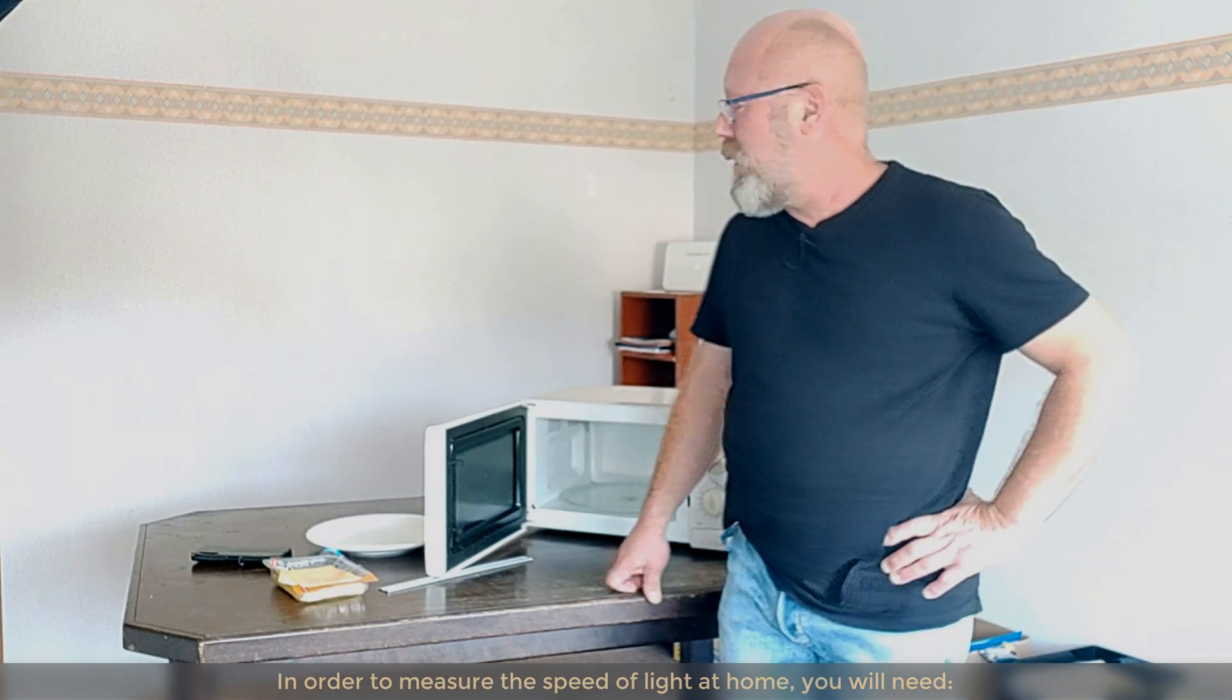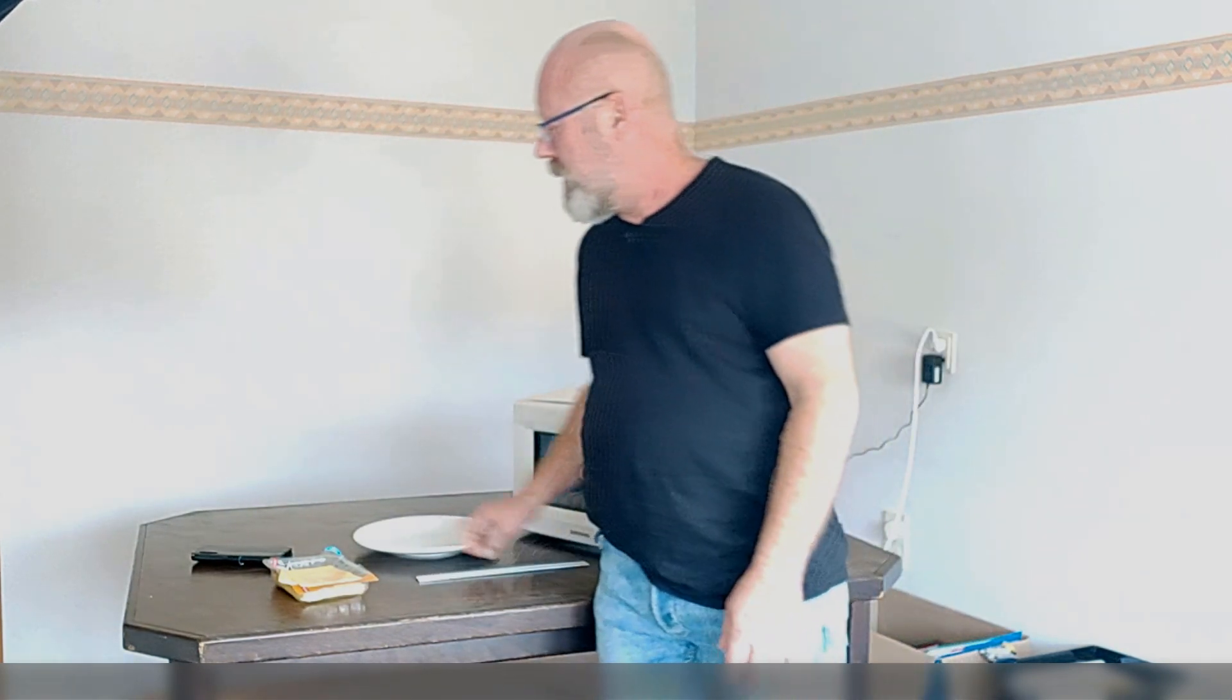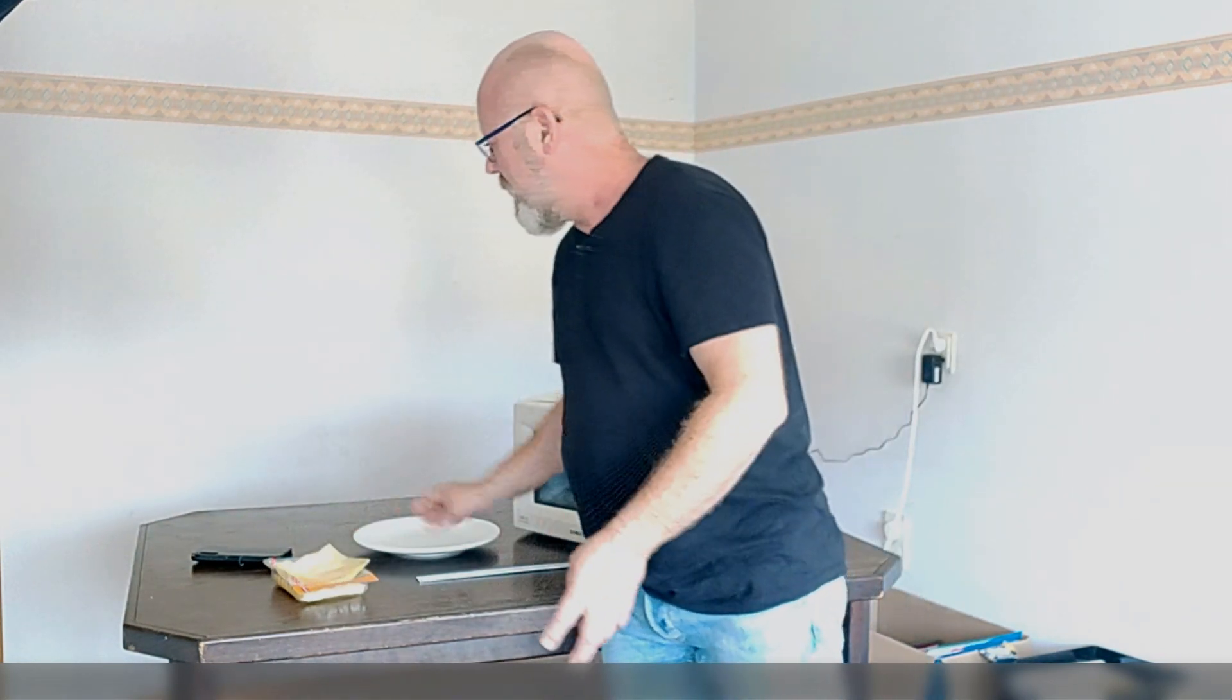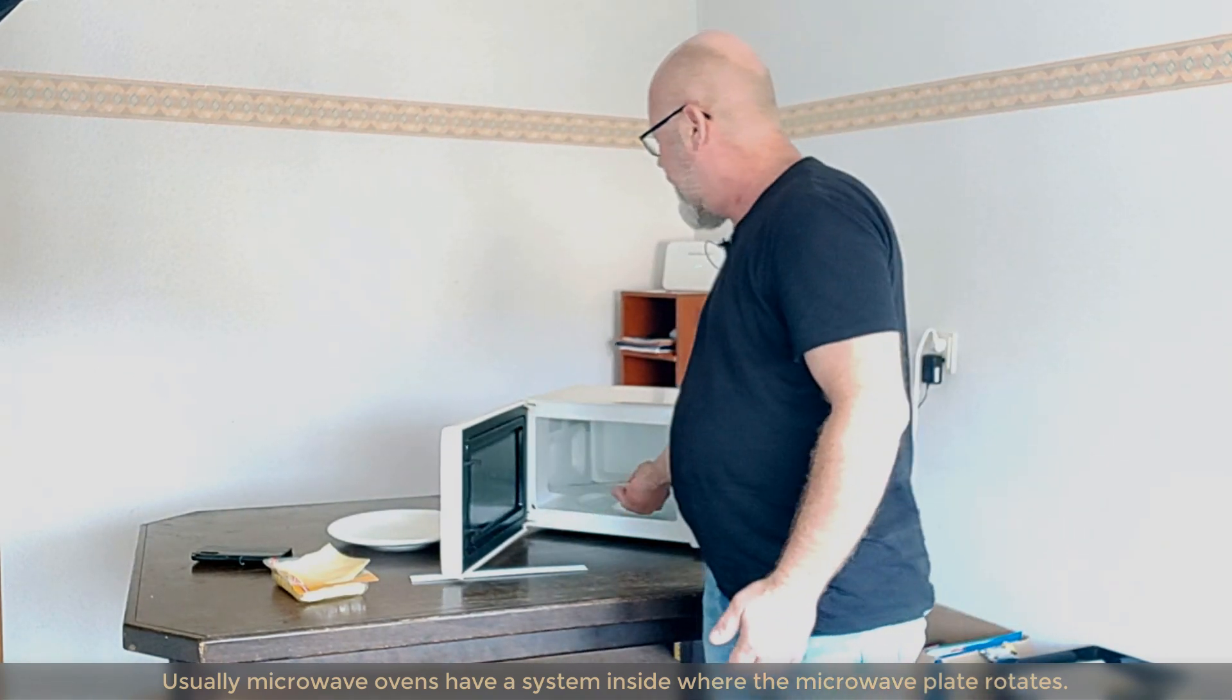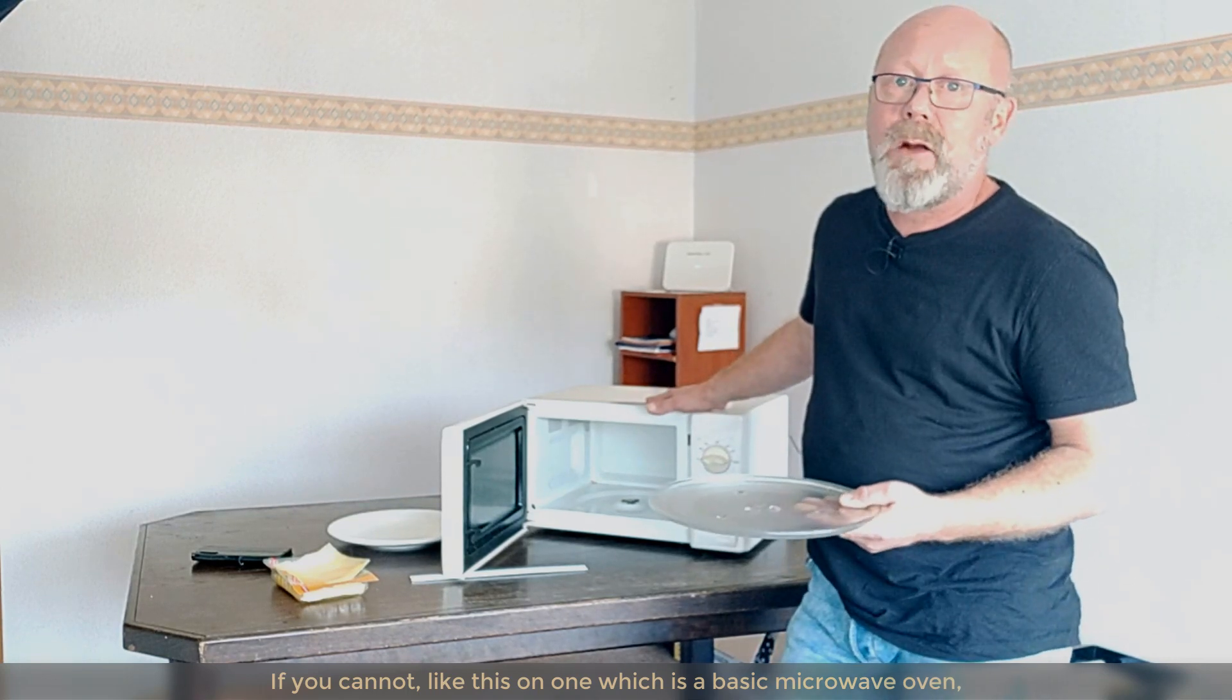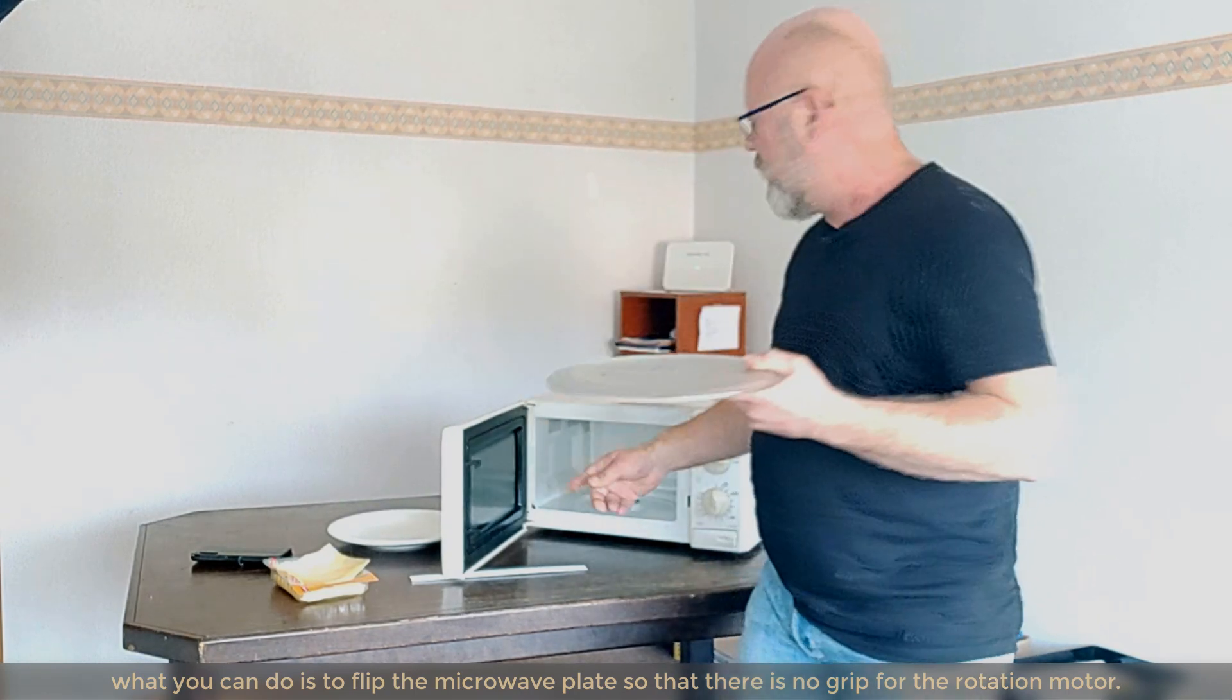Now, let's do it. In order to measure the speed of light at home, you will need a microwave oven. You will need a plate. You will need a ruler. And you will need some sliced cheese. Usually, microwave ovens have a system inside where the microwave plate is being rotated. You don't want that. You want to deactivate this if you can. If you cannot, like on this one, which is really a basic microwave, what you can do is you reverse the microwave plate so that there's no grip to the rotation motor.